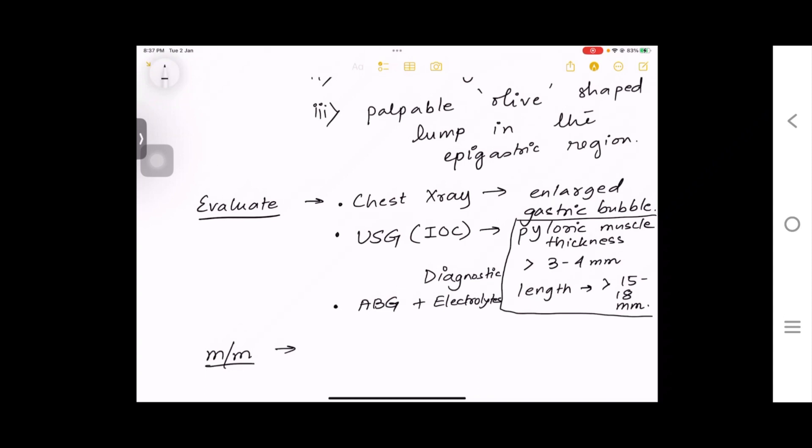How would you manage this condition? Initial management is resuscitation with IV fluids - that is you give normal saline to correct the electrolyte imbalance - and then you can go for surgery which is known as Ramstead pyloromyotomy.